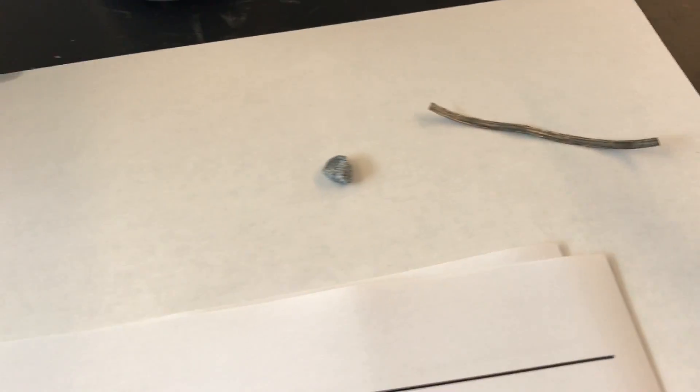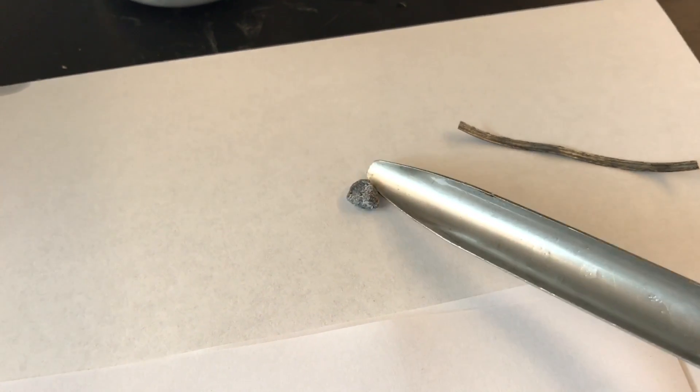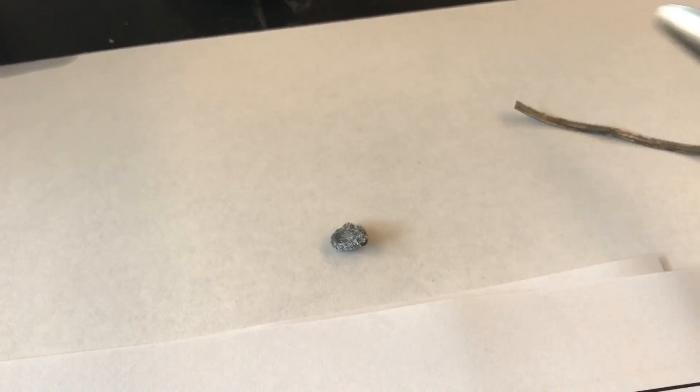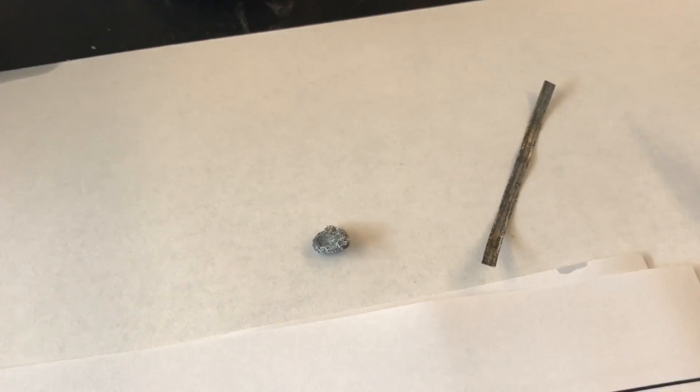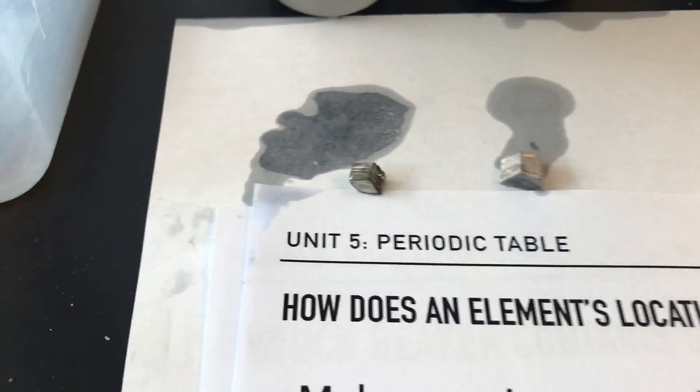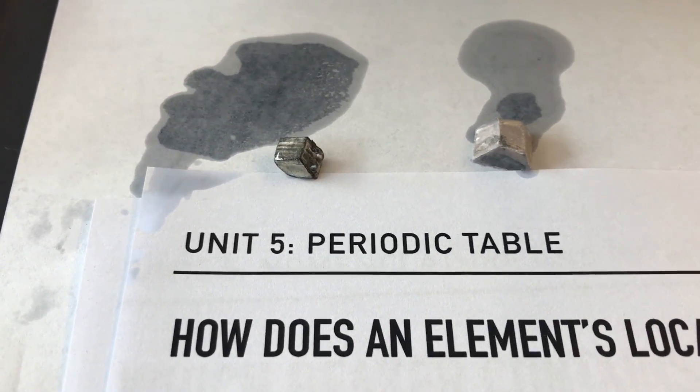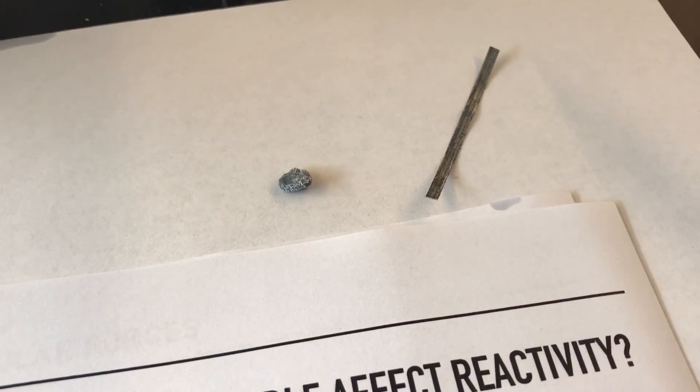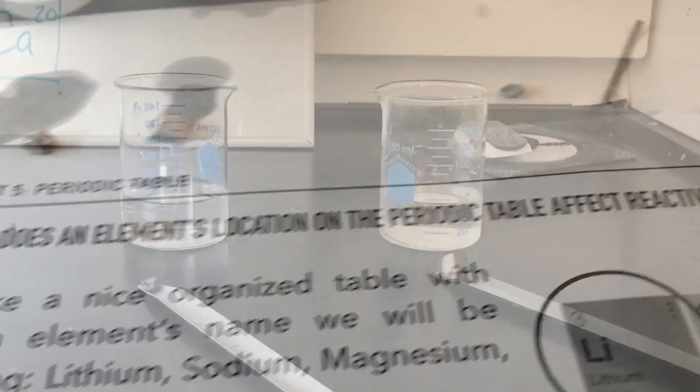And then I also have calcium right here. This is a small little piece of calcium. And a ribbon of magnesium. So make some observations. What's similar about them? Maybe what's different about them? If you need to pause the video, please do that.